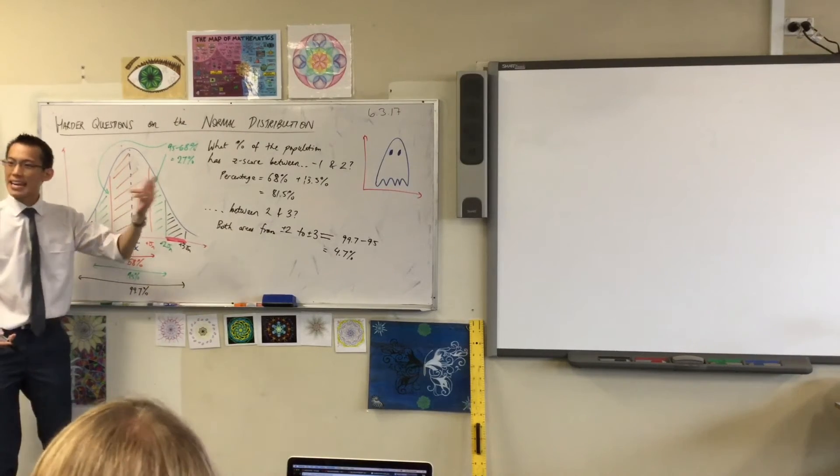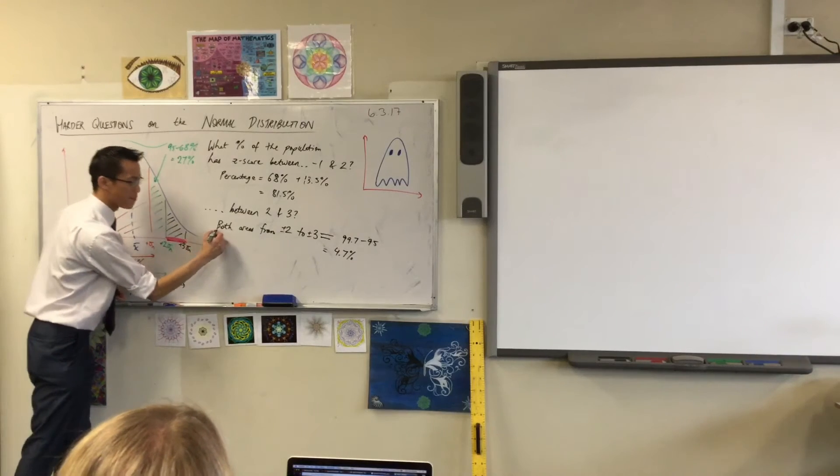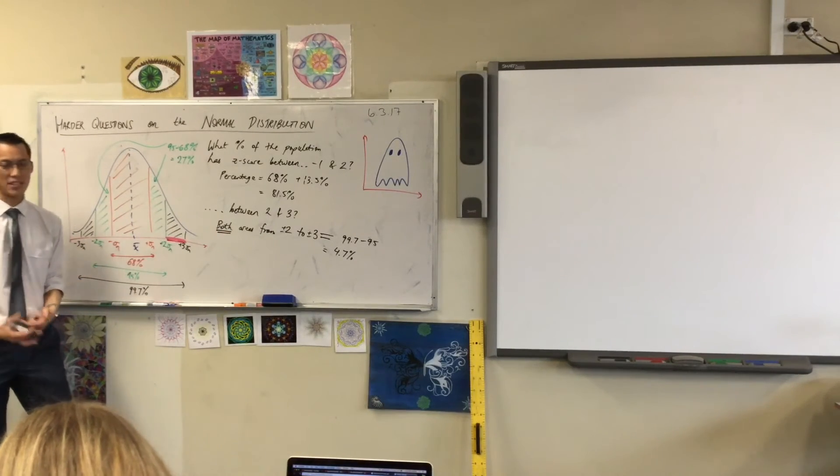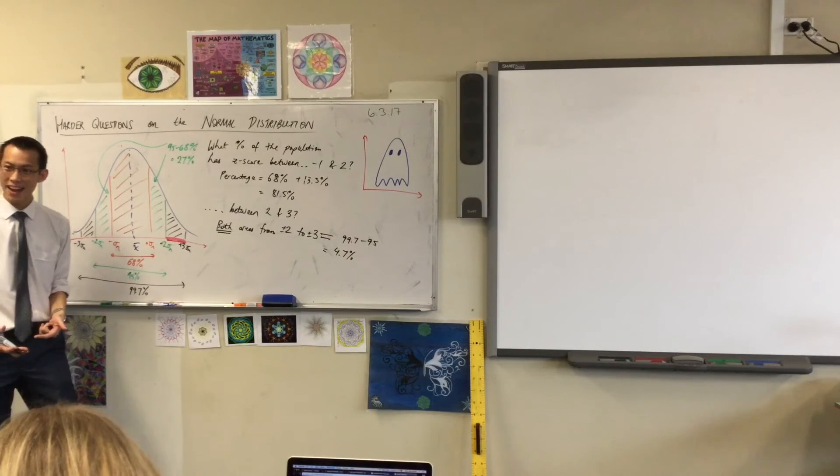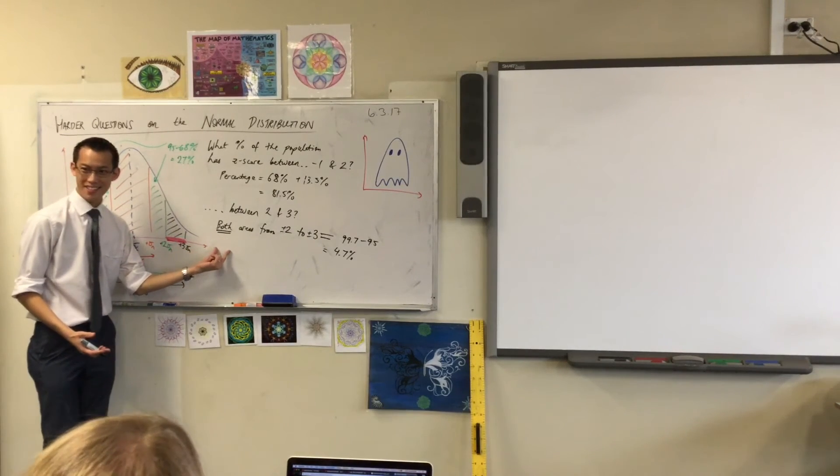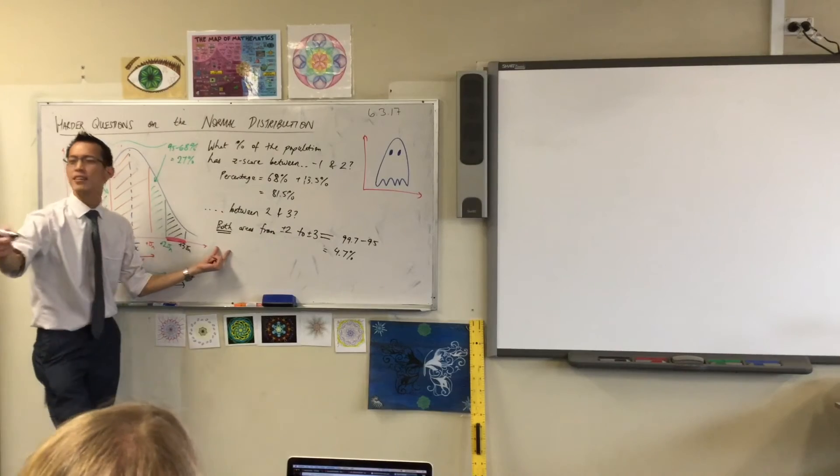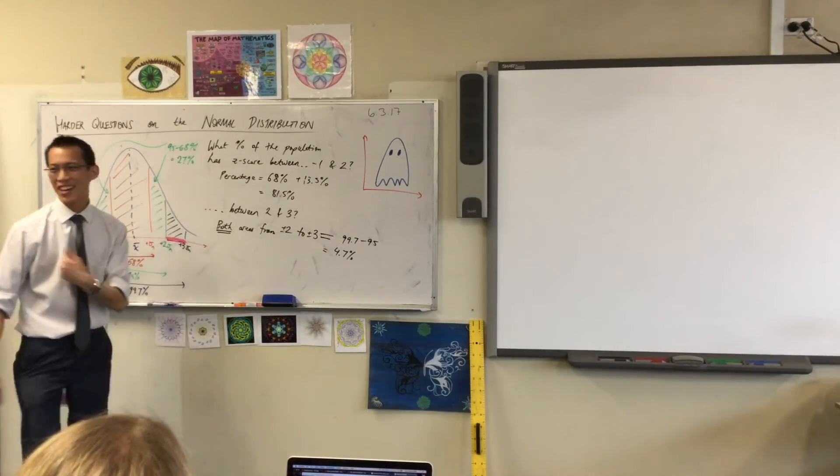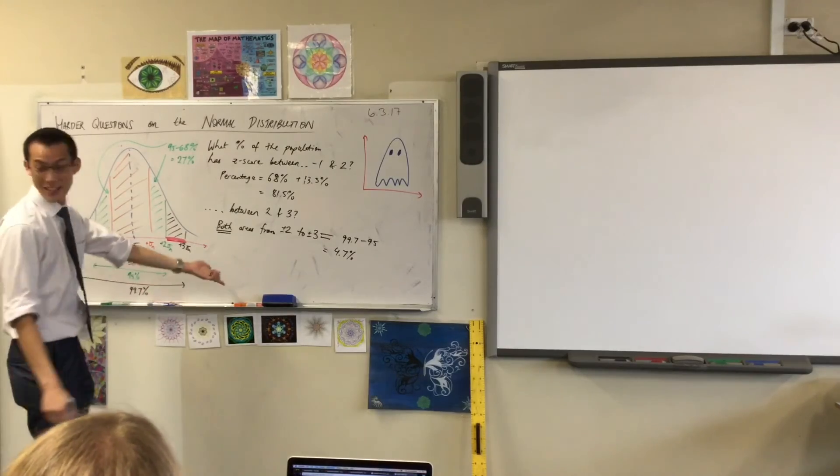Okay, but I even have in my work here that I've said both areas from plus or minus two to plus or minus three. But that's not what the question asks, right? I don't want both. I just want one of them. But do you see what you're convinced by? You're not convinced because I showed you the number, because I haven't worked it out yet.